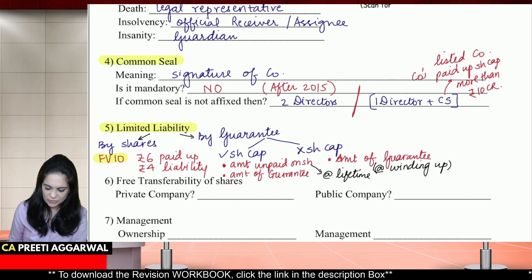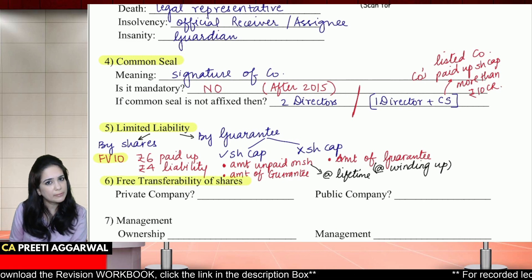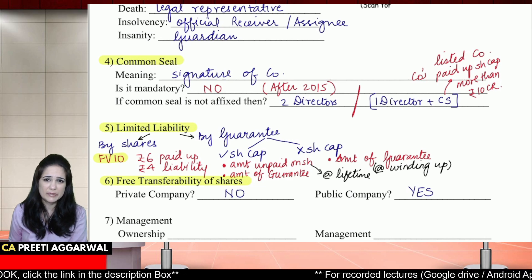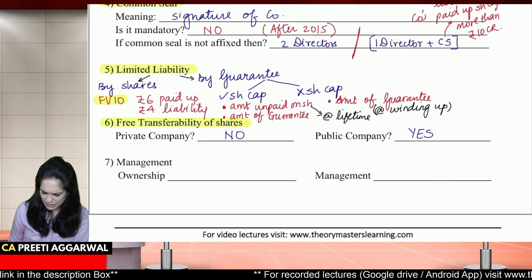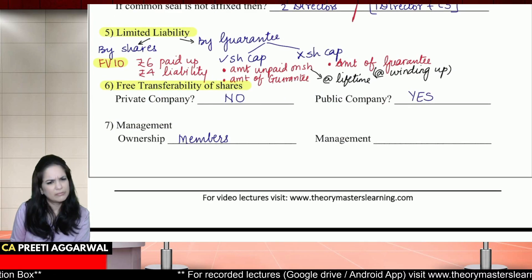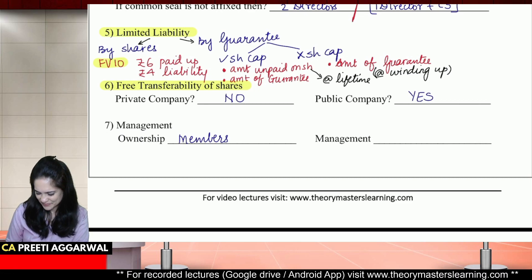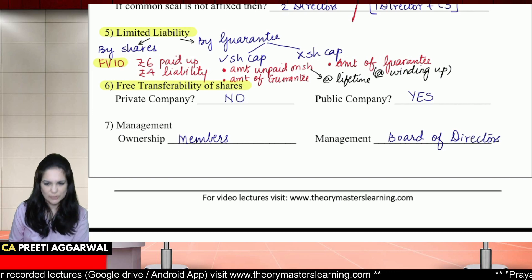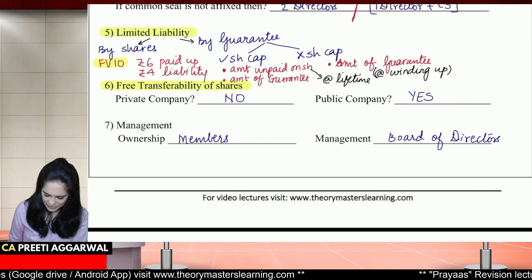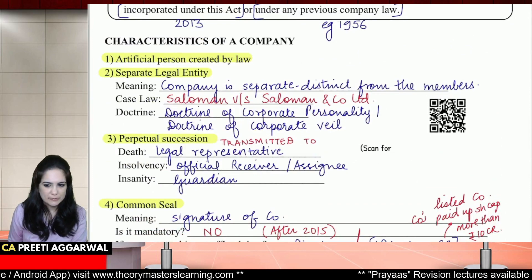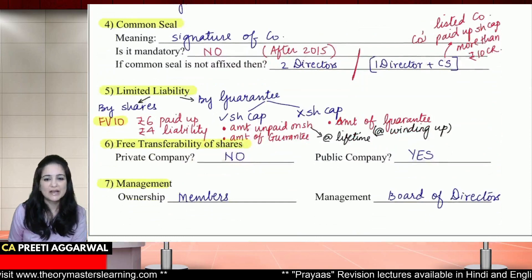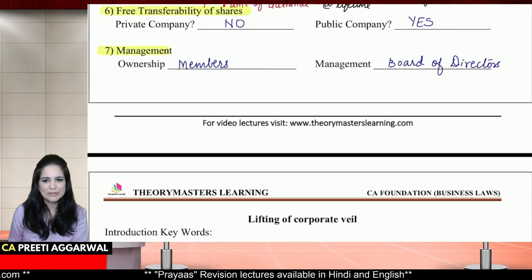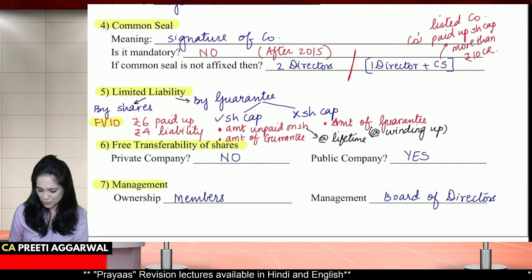Free transferability is possessed only by public companies. Private companies — free transferability, no. Public company — yes, there is free transfer; you need not ask any person before transferring shares. As for management, ownership is with the members, but who manages? They need not worry — management is by the board of directors. So we studied: artificial person, separate legal status, perpetual succession, common seal, limited liability, free transferability of shares, and management — these were the characteristics of a company.